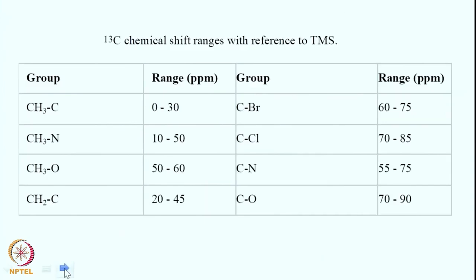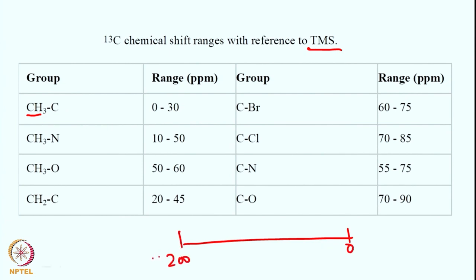For carbon-13, chemical shifts range from 0 to over 200 PPM relative to TMS. CH3 (SP3, shielded) appears at approximately 0–30 PPM. Attaching nitrogen gives 10–50 PPM; attaching oxygen gives 50–60 PPM. When CH3 becomes CH2 — two protons instead of three — it is less shielded and shifts to higher PPM values.